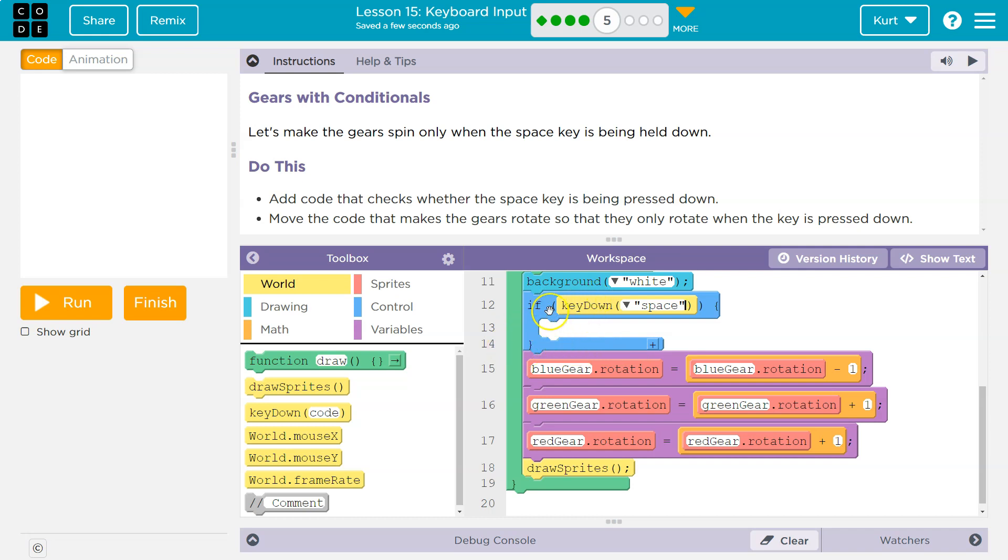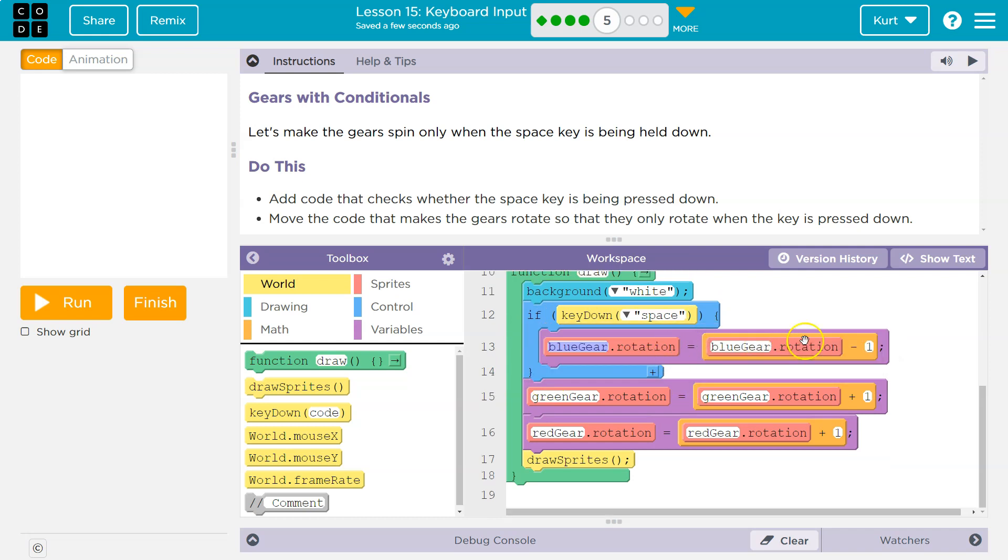Otherwise, it just skips over it and runs the code below. So I'm just going to put blue gear in here for now, which is rotating backwards. And let me demo this.